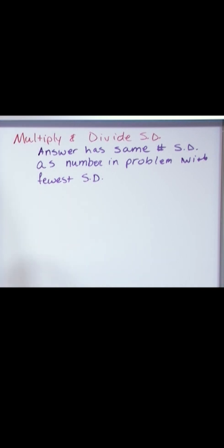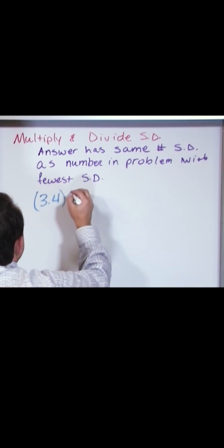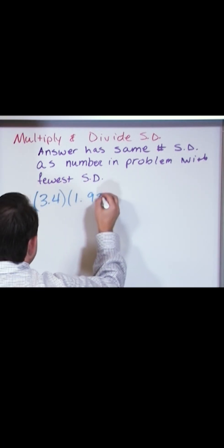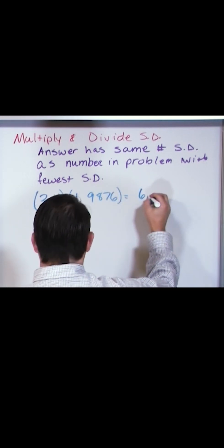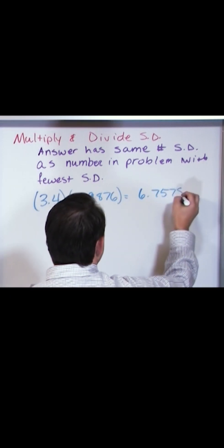What it's basically saying is if I'm taking the number 3.4, how many significant digits do I have? Two significant digits. I'm multiplying it by 1.9876. What I'm going to get is 6.75784.